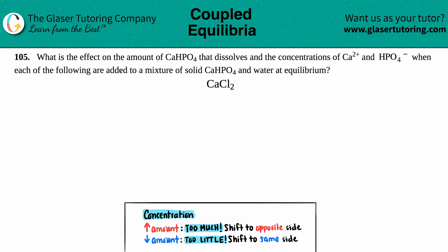Number 105: What is the effect on the amount of CaHPO4 that dissolves, and the concentrations of Ca2+ and HPO4 minus, when each of the following are added to a mixture of solid CaHPO4 and water at equilibrium? The first case is the addition of CaCl2. So what's going to happen to CaHPO4, Ca2+ and HPO4 minus when CaCl2 is added?